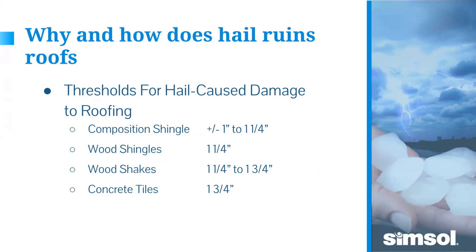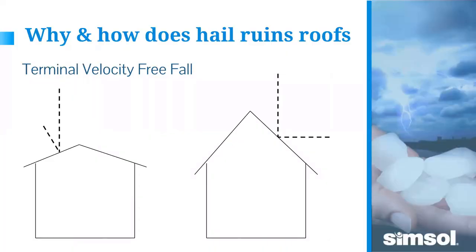For wood shingles and shakes, you're looking for an impact mark with a split — about one and a quarter to one and three-quarter inches. For concrete tiles, one and three-quarter inches and up — you need something at least golf ball size to start causing damage. Tiles are quite stout.